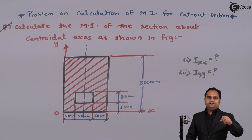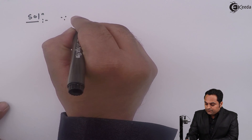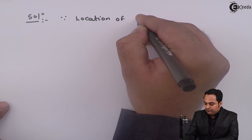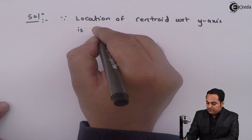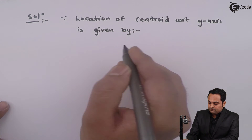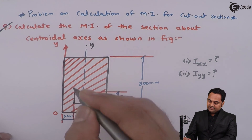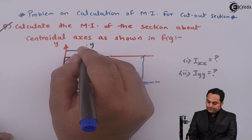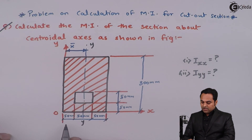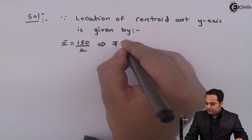Before finding the moment of inertia, we should know where the centroid is located. So first we are going to locate the centroid. In the solution, the location of centroid with respect to the Y-axis is given by x-bar. The total width is 150 mm, and this is the Y-axis of the complete section, so x-bar is half of 150, which comes out to be 75 mm.